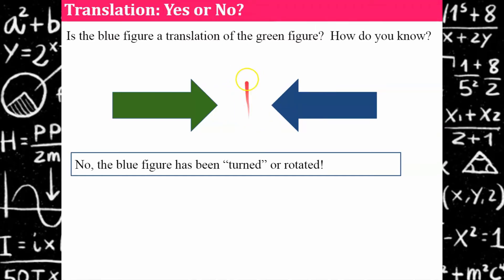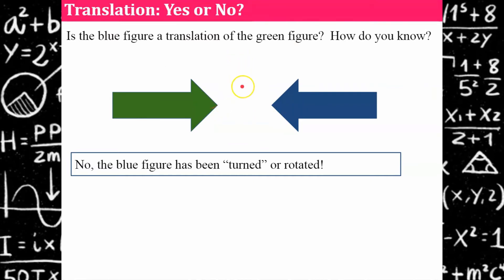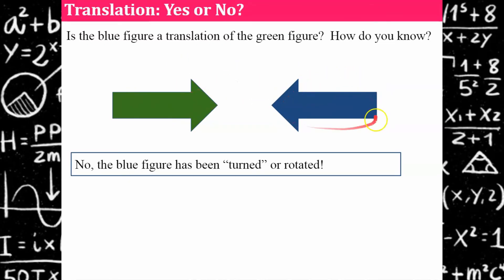You could also say it was reflected. But whether it was turned or reflected, there's nothing you can do to slide this figure left or right or up or down to make it overlap the blue figure. So this cannot be a translation.